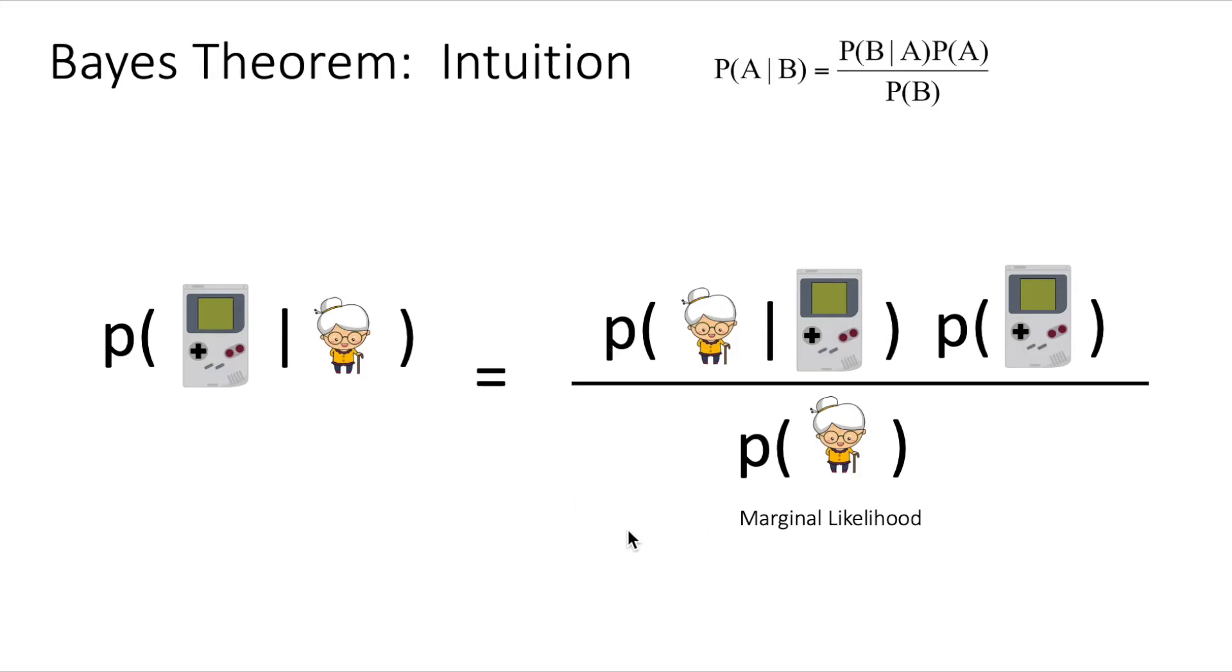And the last term is the marginal likelihood. And this term is basically normalizing this equation to make this a valid probability distribution. In general, we cannot directly calculate this term. We need to marginalize it and sum over all the possible items in order to estimate this value. Don't worry if you didn't understand the mathematical terms or names for these elements. We are going to see them later. But the core of this slide is to make you have an intuition of what each of these terms are doing.